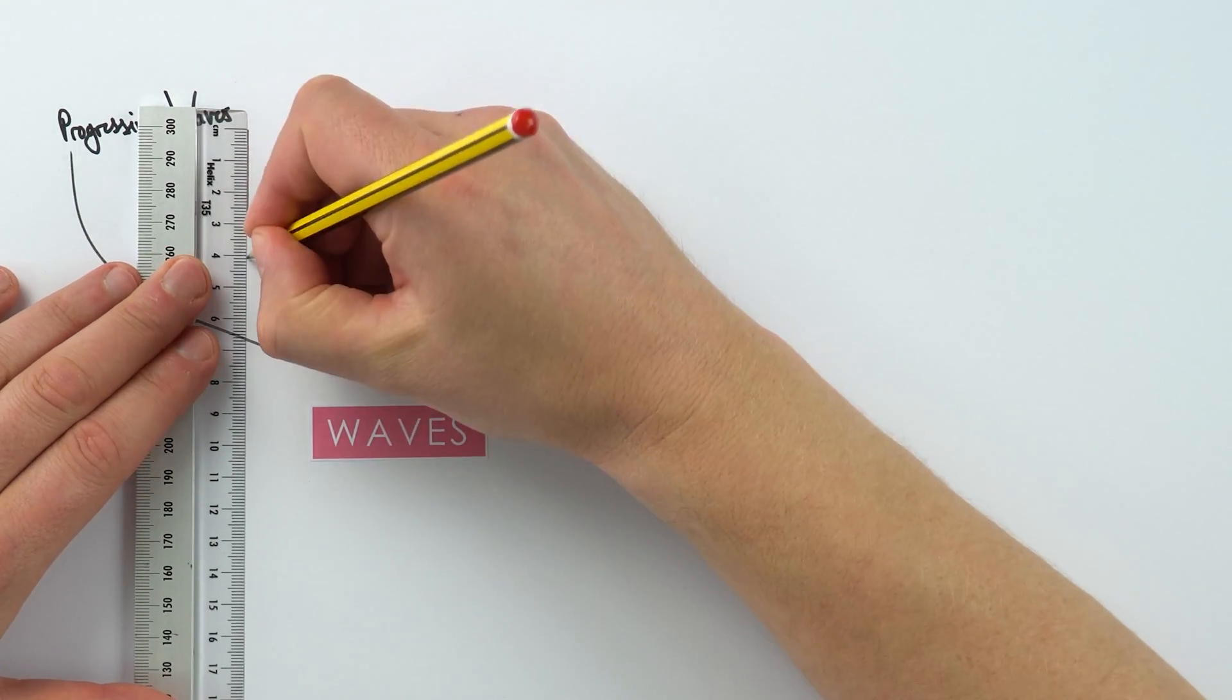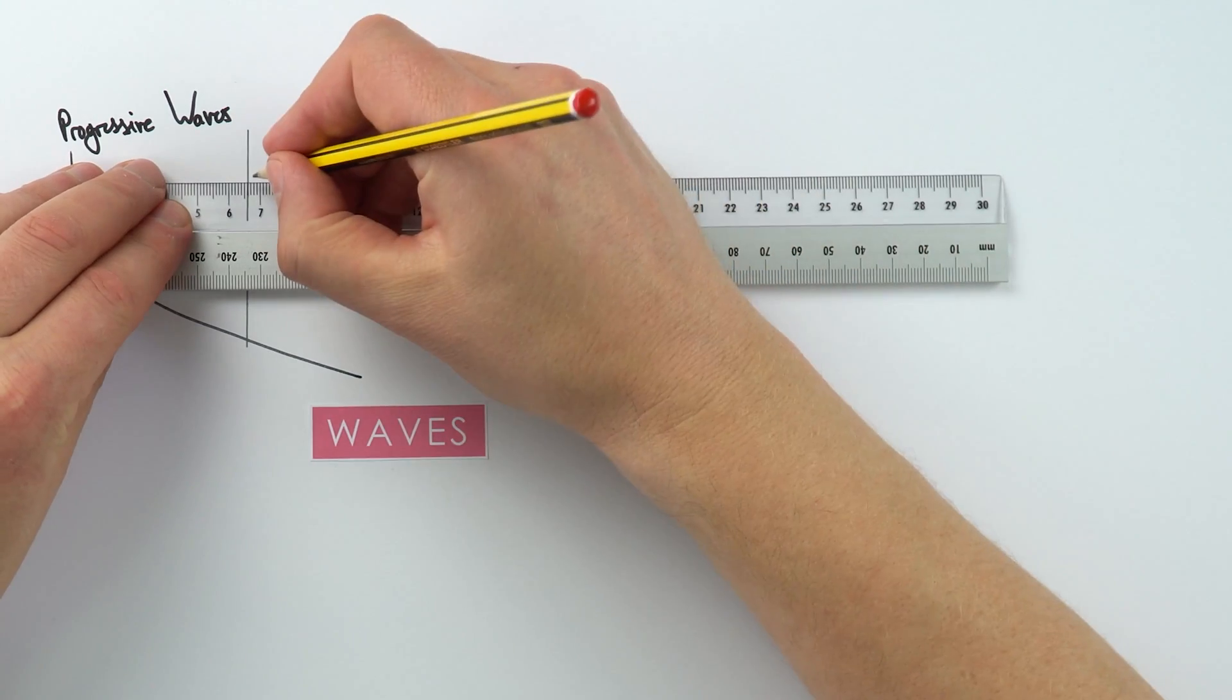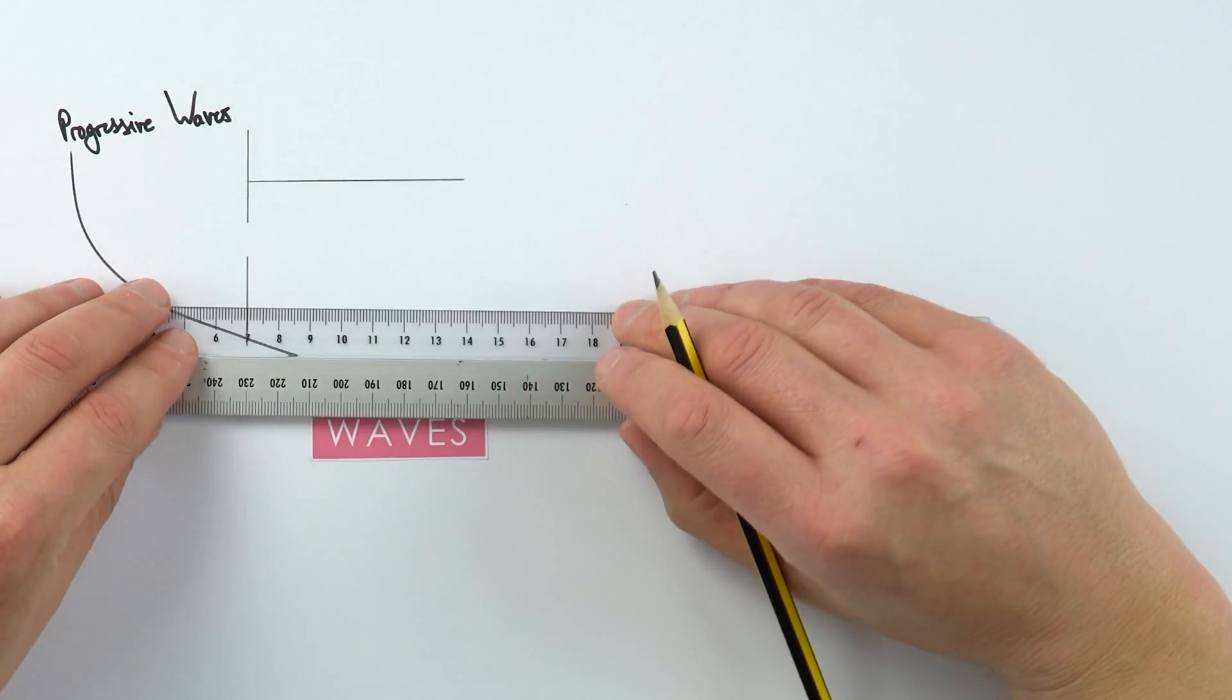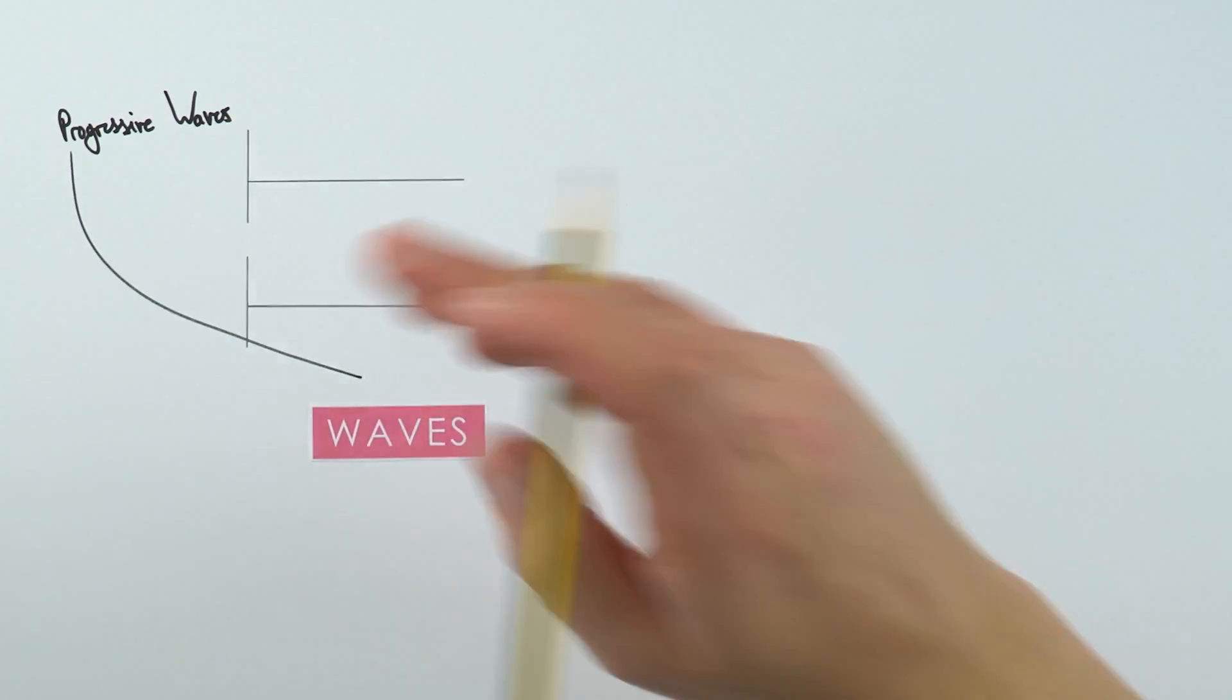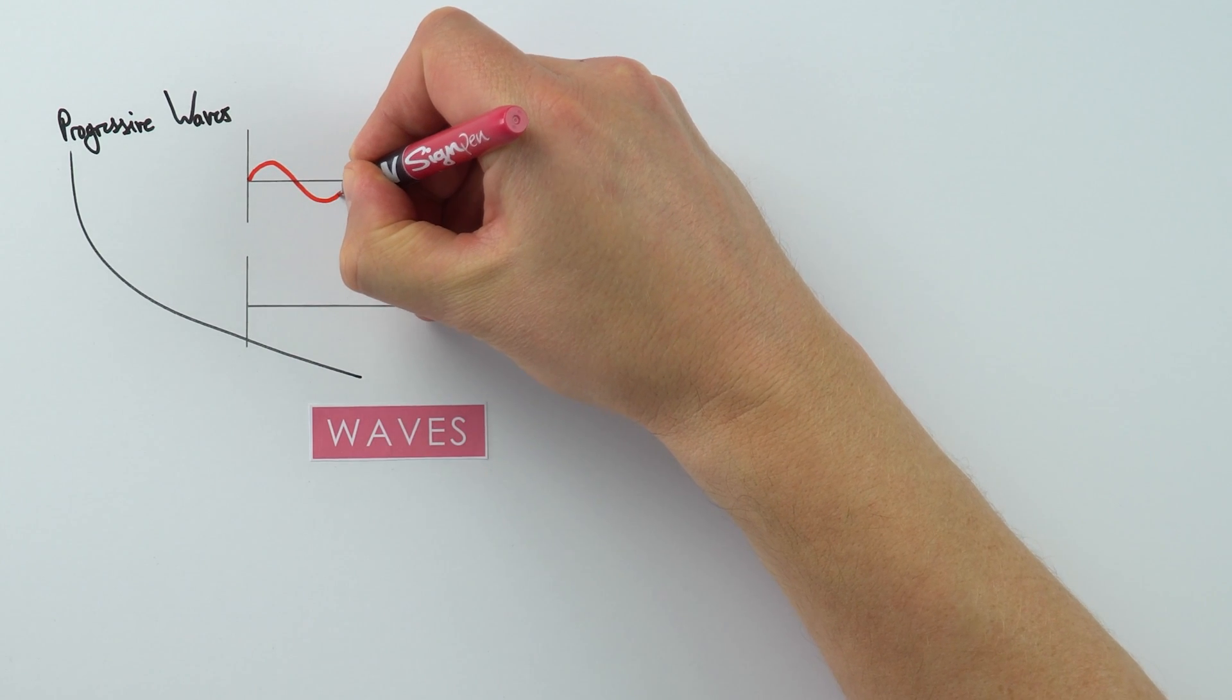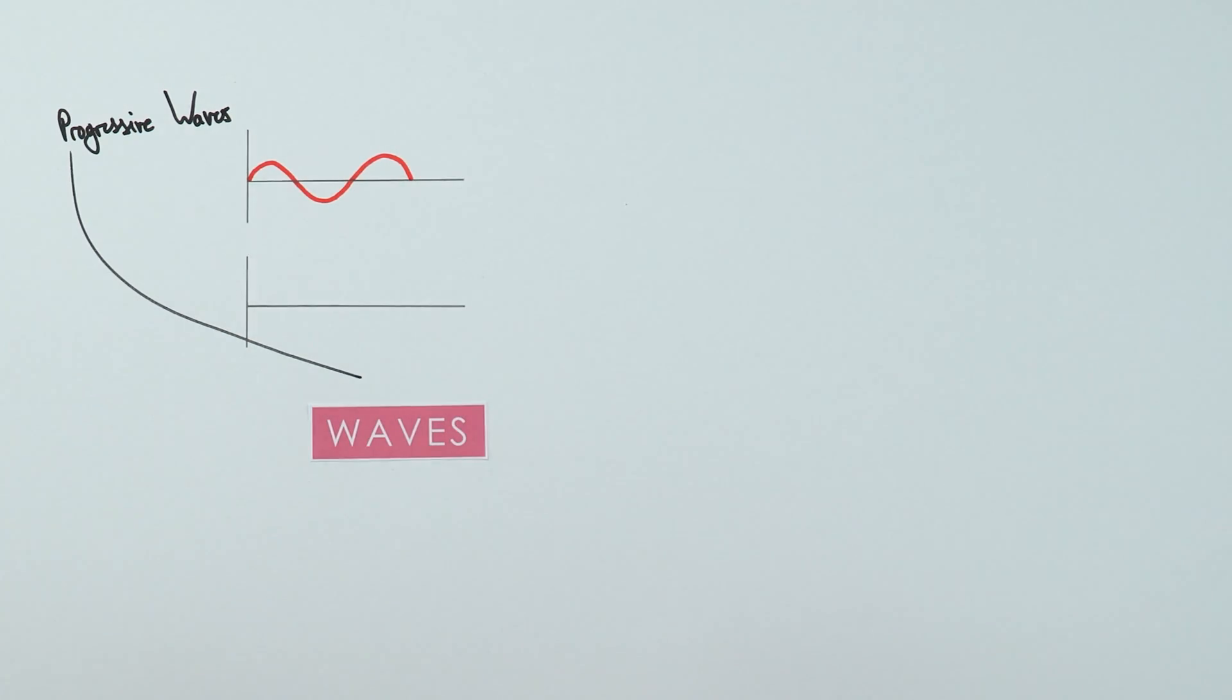I'm just going to do these one above each other. The graphs that we tend to look at are sinusoidal in shape, so it looks like a sine or cosine wave. It's really important to get to grips with actually drawing these shapes. This is a skill that you will develop, drawing a kind of sine curve like that.